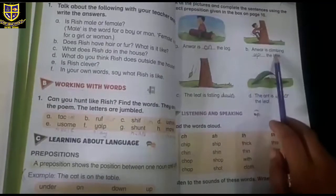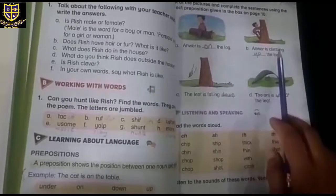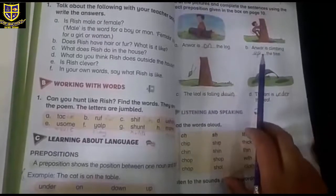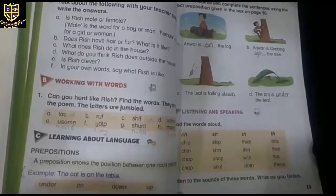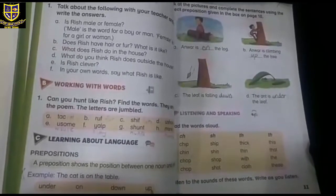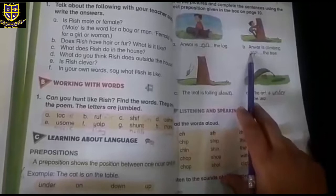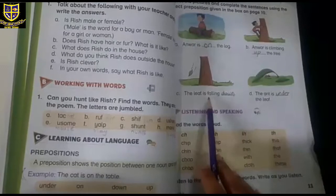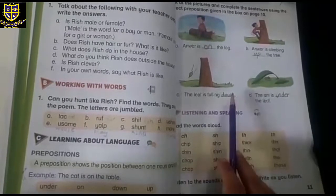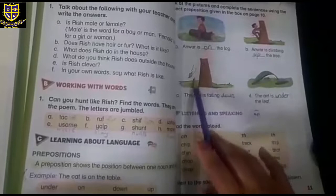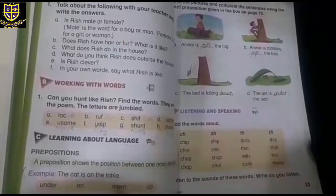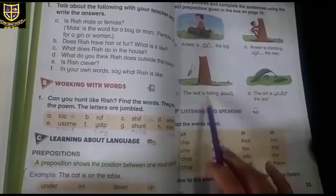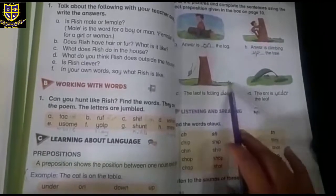B: Anwar is climbing dash the tree. He is climbing upward. For this, which preposition do we use? Up. C: The leaf is falling down. So down is a preposition.